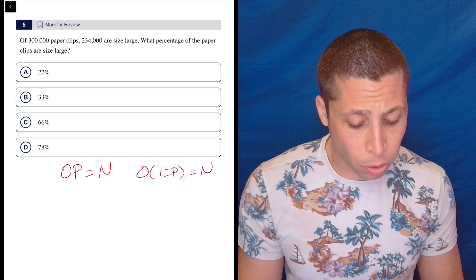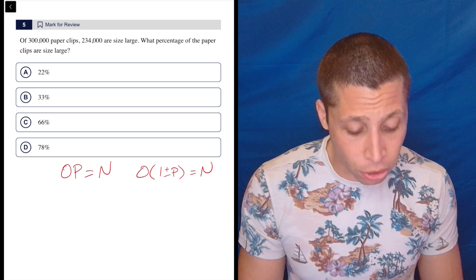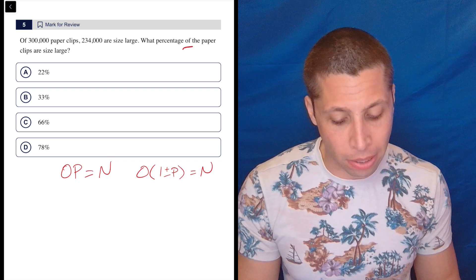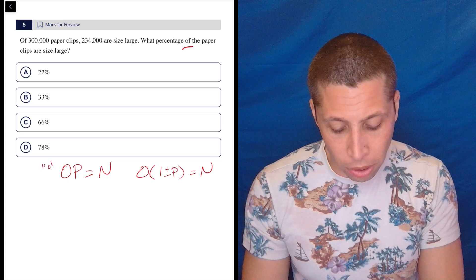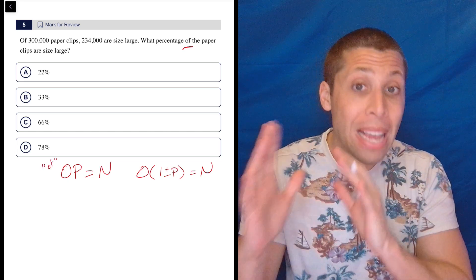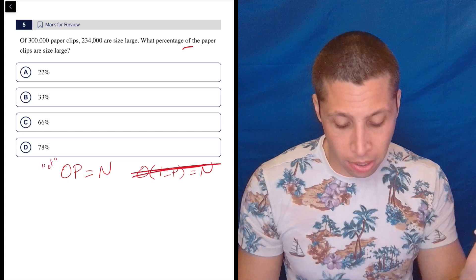Of 300,000 paperclips, 234,000 are size large. What percentage of the paper clips are size large? And that of is important because that's also a word I associate with the basic open formula. So we're not going to use this. We're going to use this.